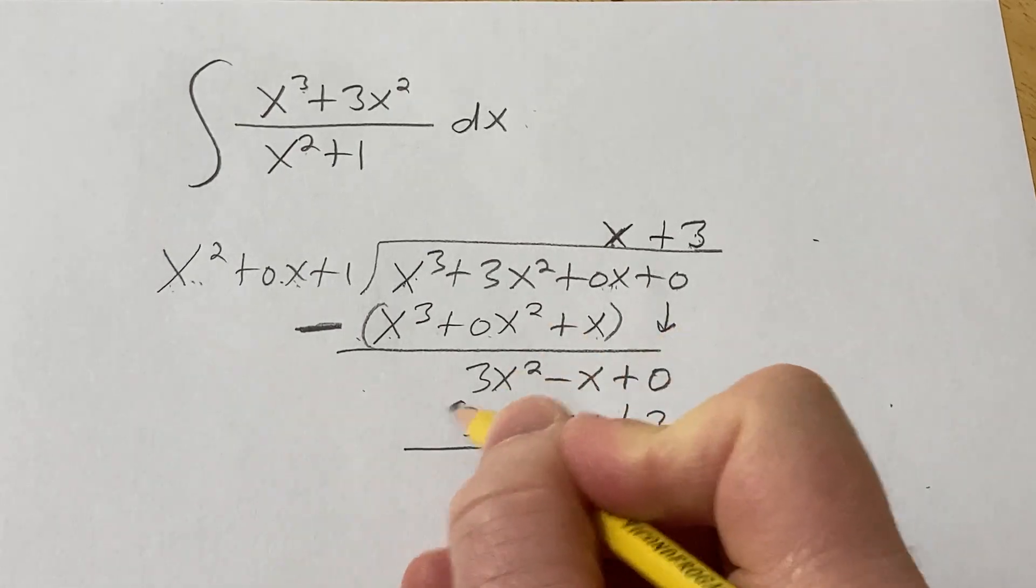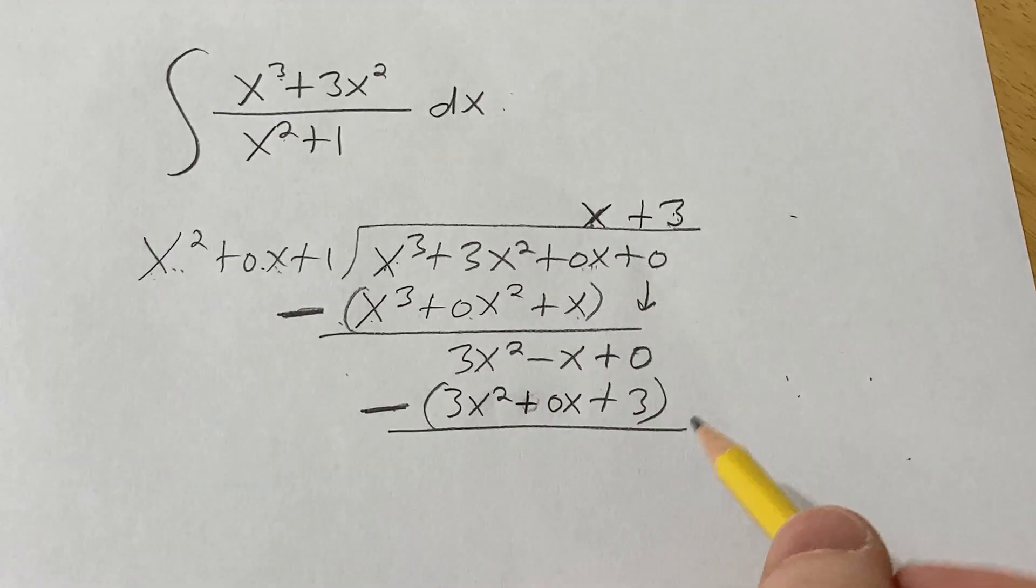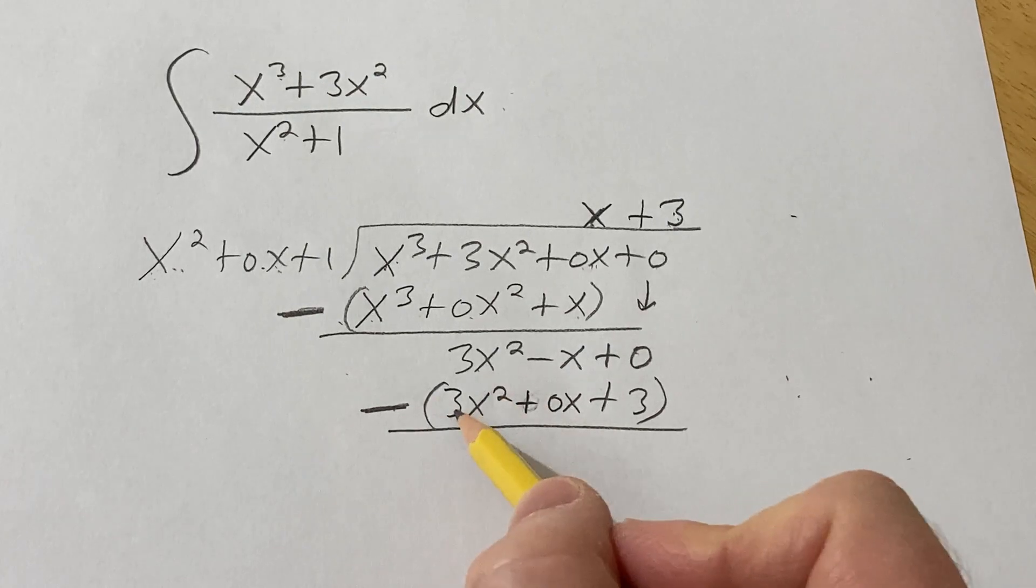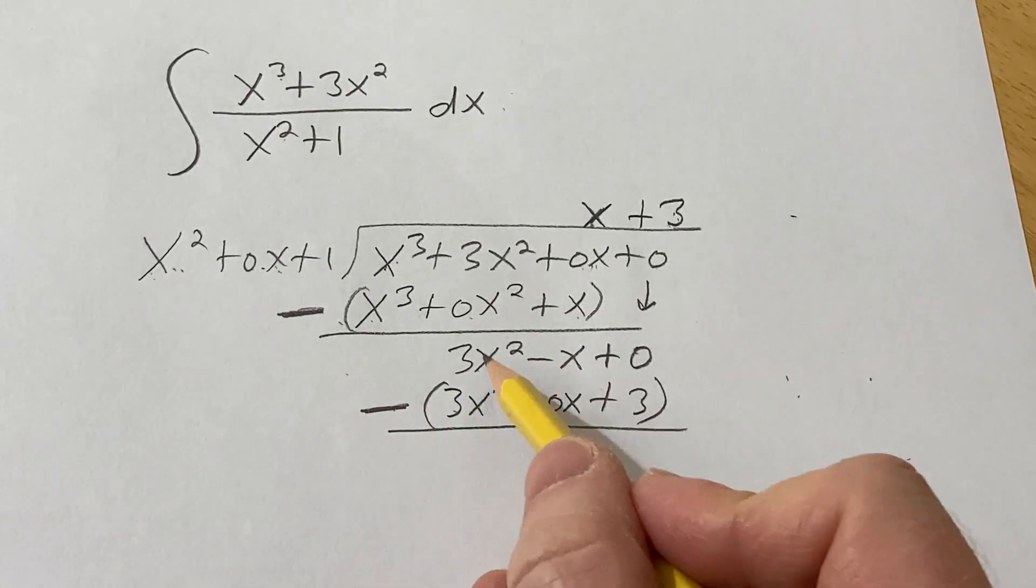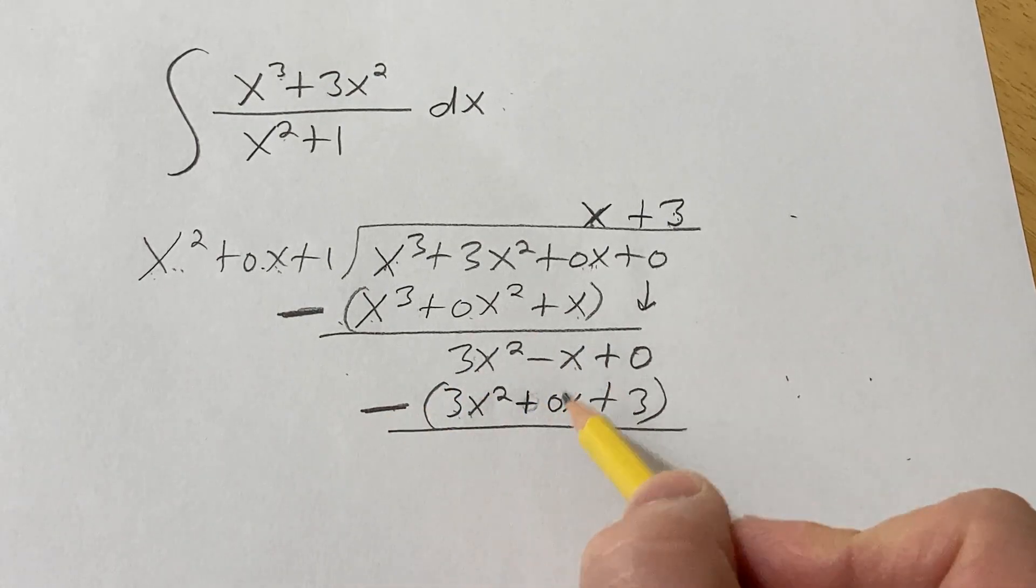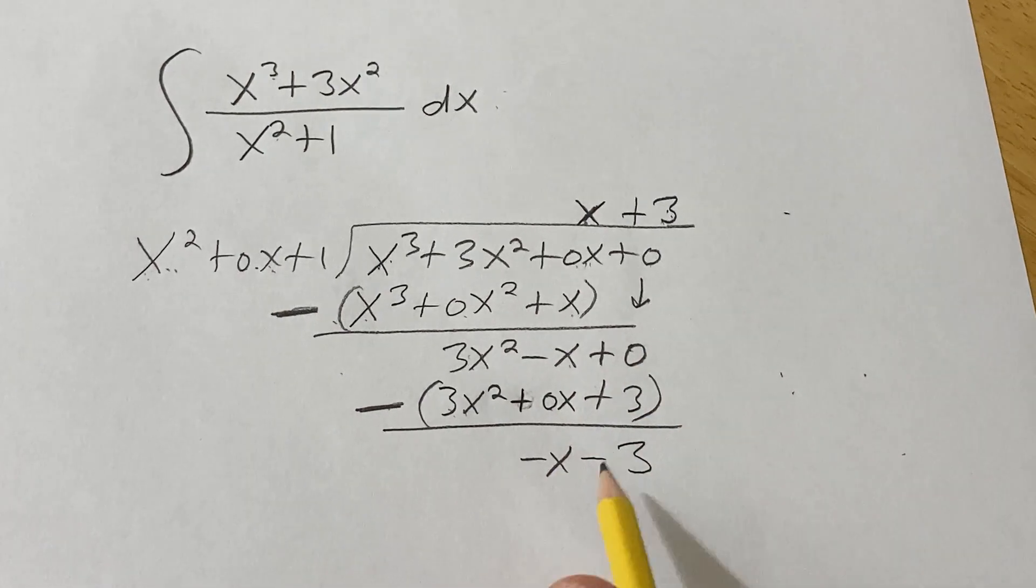Draw a line. Parenthesis. And then a giant minus sign there. So now we distribute the negative or subtract. So it goes away. We're just going to get a negative x. And we're going to get a negative 3. So that's the remainder.